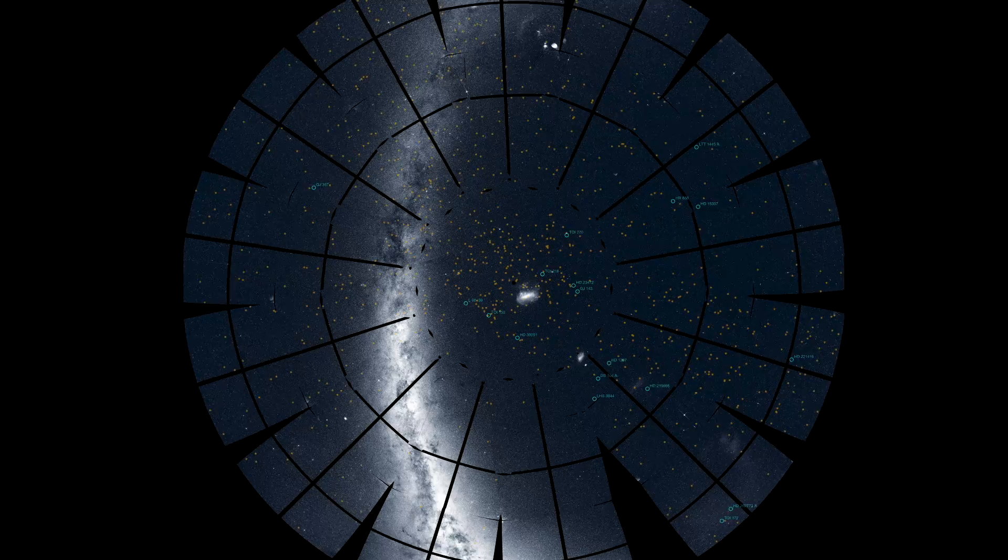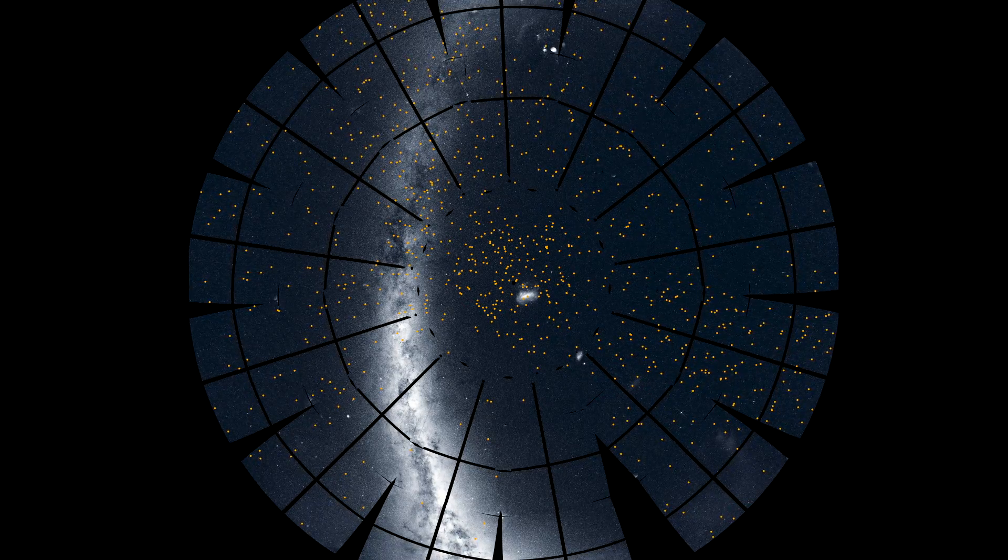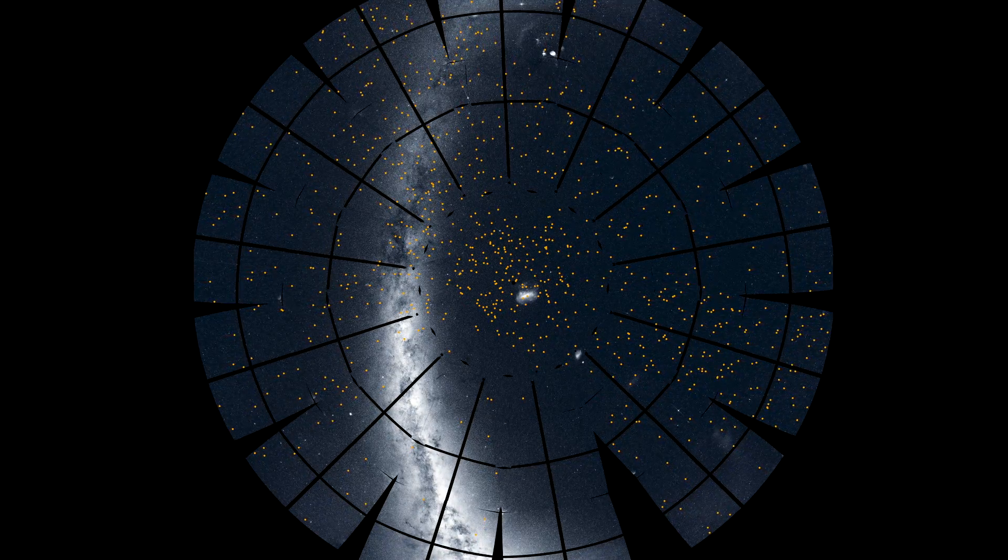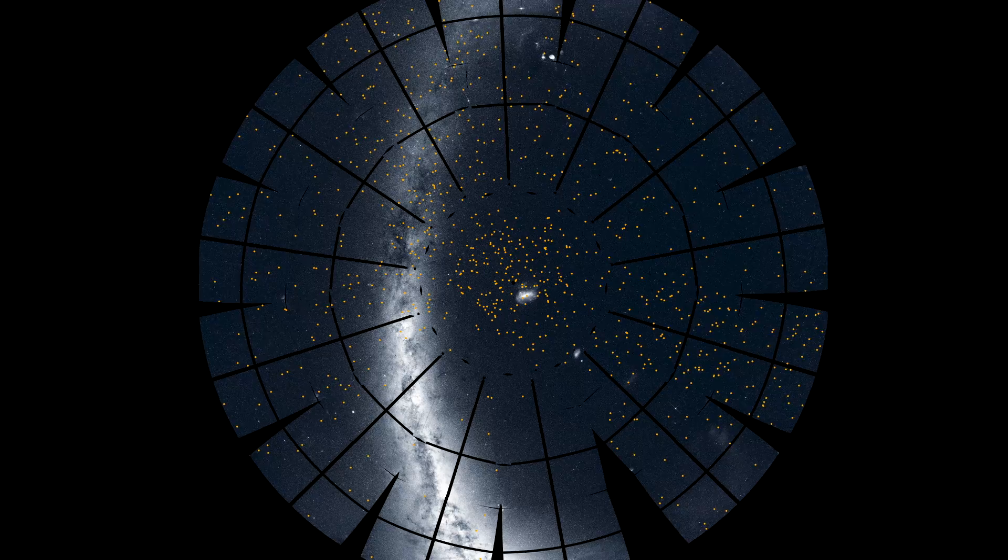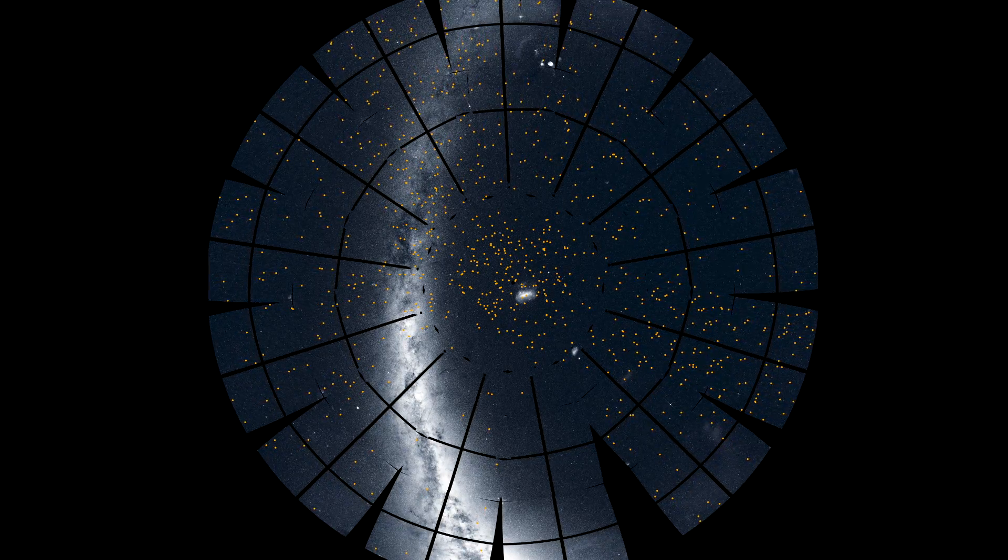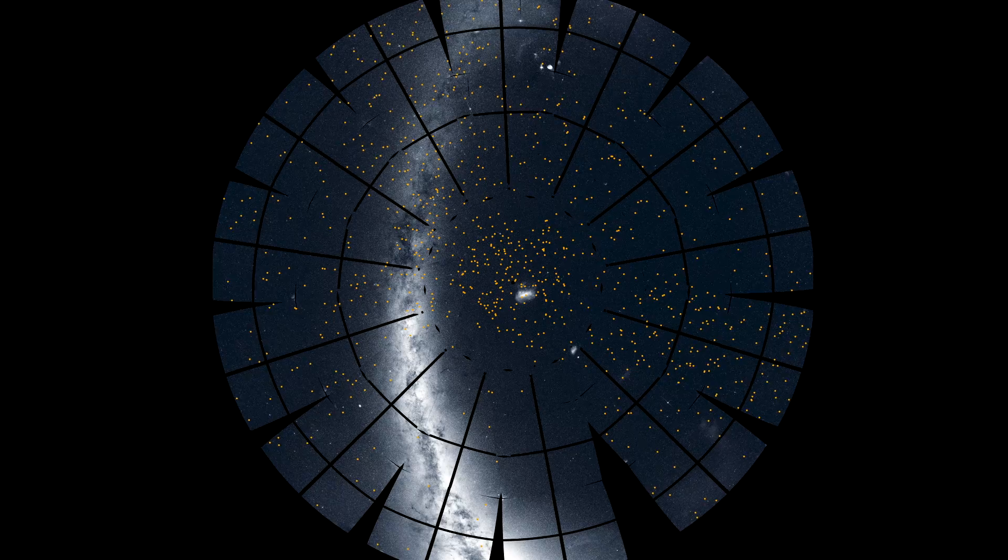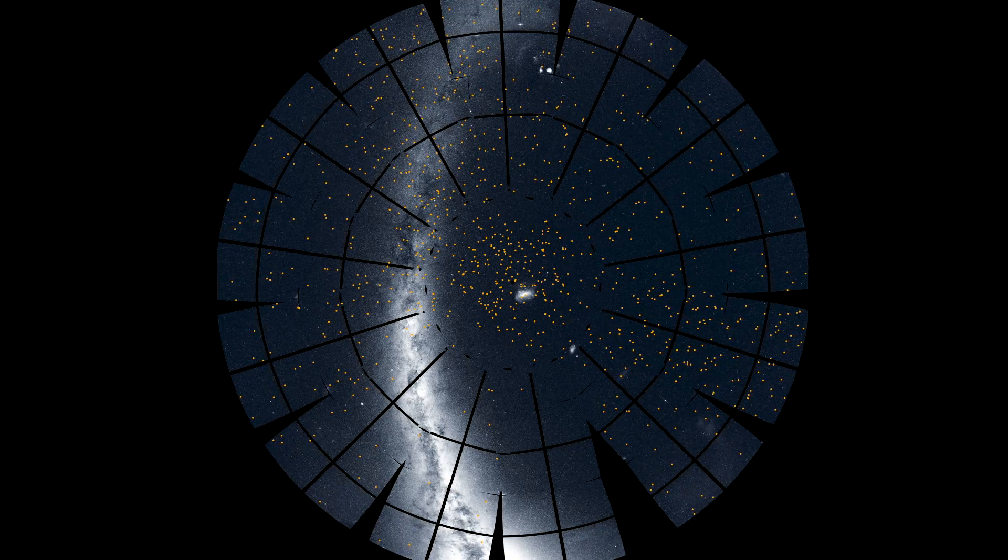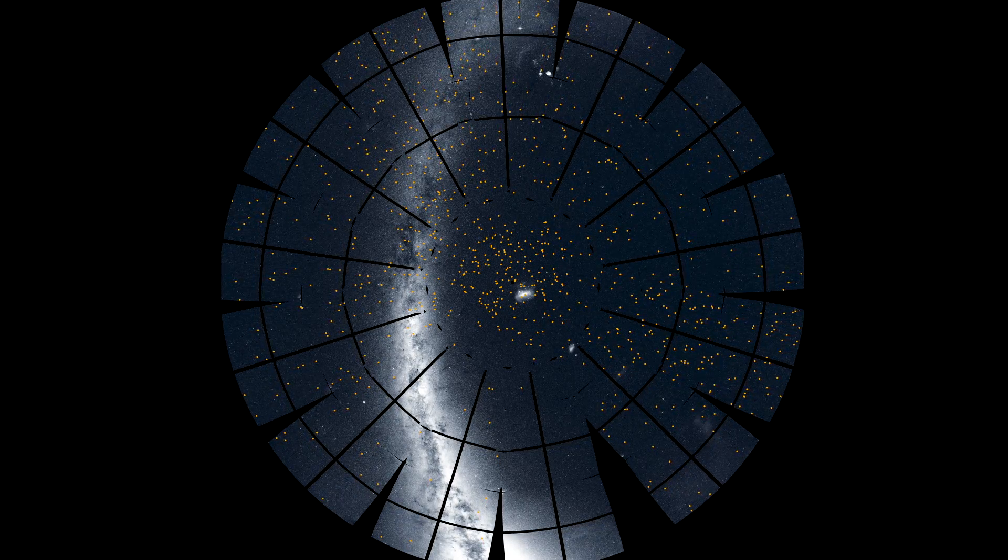Many more candidate exoplanets await confirmation. It's easy to see which sectors were among the first, because astronomers have had more time to study them and find potential transits. Eventually, candidate and confirmed planets will be distributed more evenly around the sky.